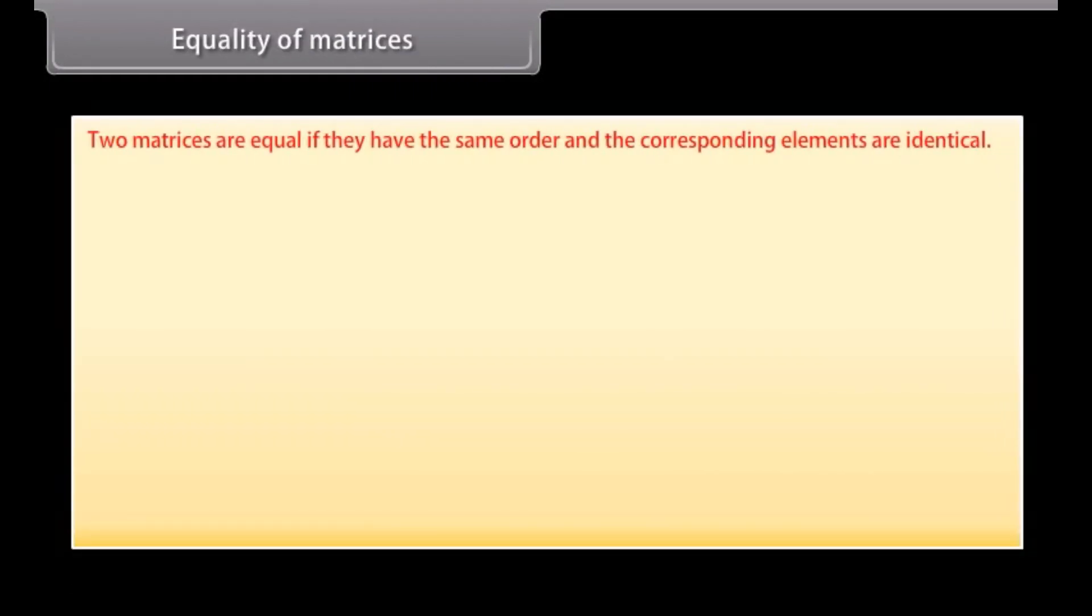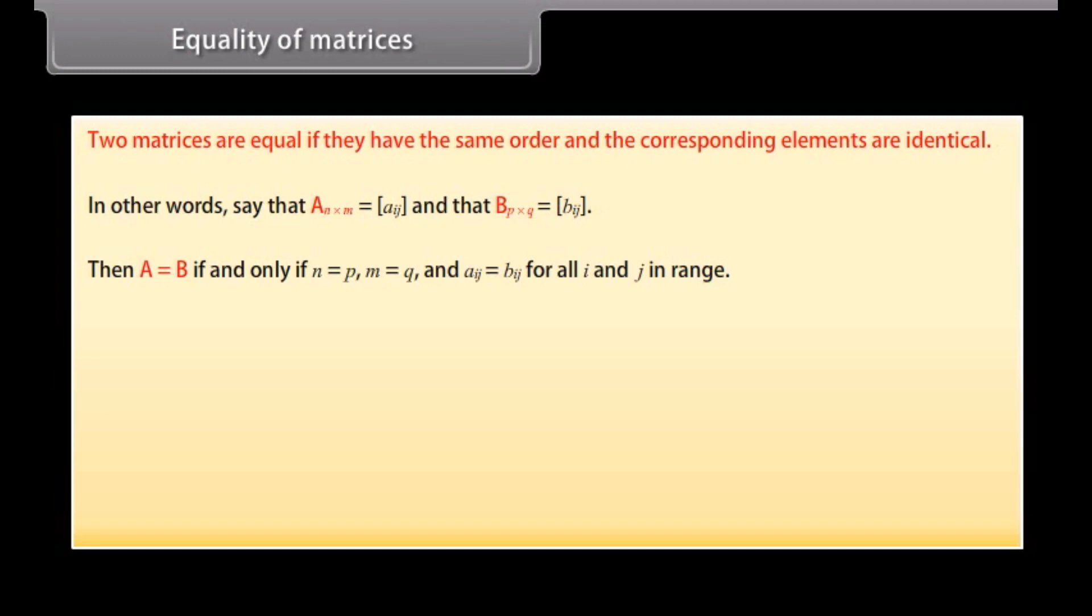Equality of matrices. Two matrices are equal if they have the same order and the corresponding elements are identical. In other words, say that A N by M is equal to A IJ and that B P by Q is equal to B IJ. Then, A is equal to B if and only if N is equal to P, M is equal to Q and A IJ is equal to B IJ for all I and J in range.